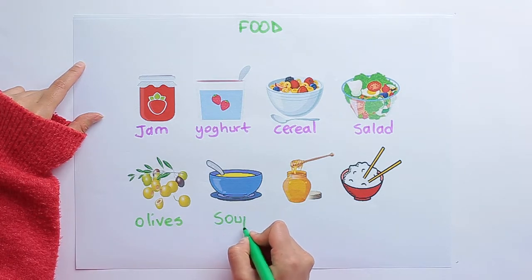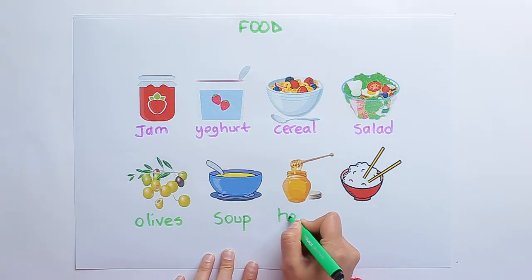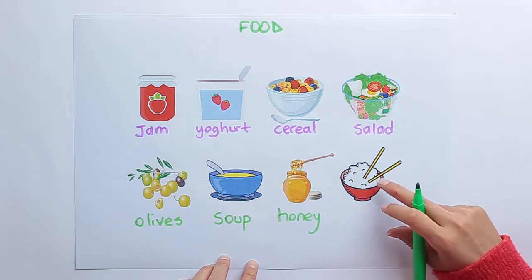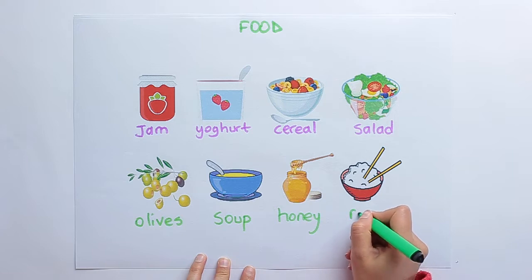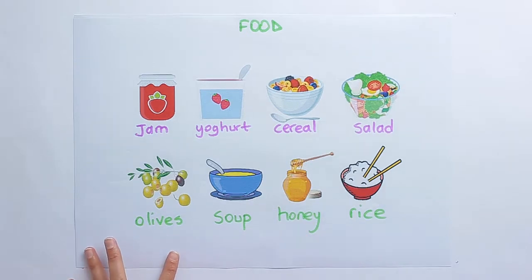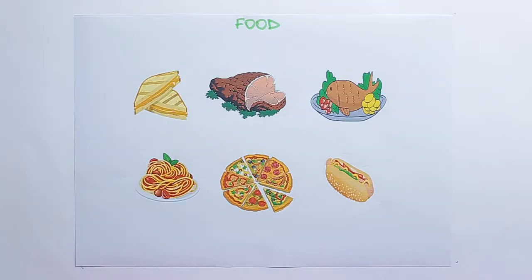Salad. What are they? They are olives. Do you know soup? Next, look at this picture — honey. And what is it? Rice. Let's go on.